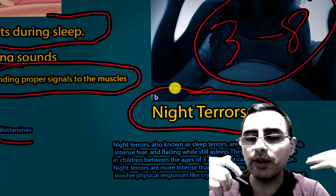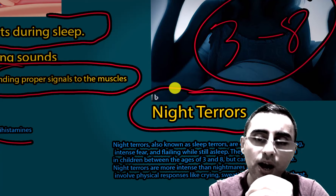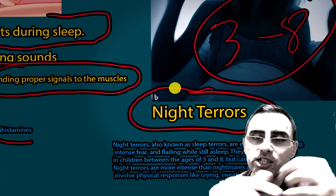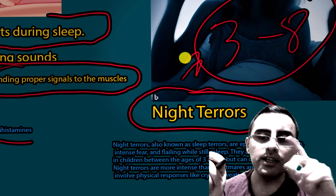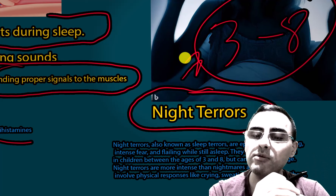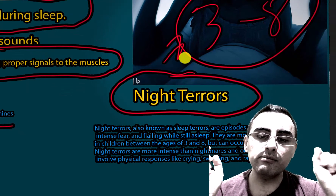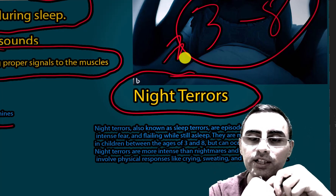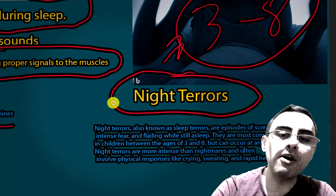Nightmares are also common, particularly in adults. With a nightmare, the person has bad dreams and usually remembers them. Night terrors, by contrast, are not remembered. Night terrors can occur in both children and adults but are much more common in children. Night terrors involve more intense physical responses such as crying, sweating, and a rapid heartbeat.